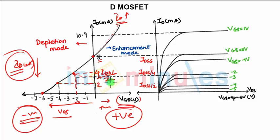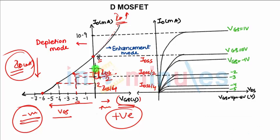The two conditions are IDSS/4 and IDSS/2. IDSS/2 gives a value of 4 mA and IDSS/4 gives a value of 2 mA. For each of these you have two corresponding values of VP.